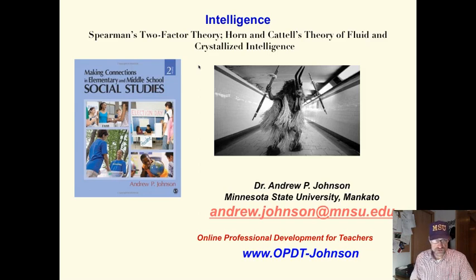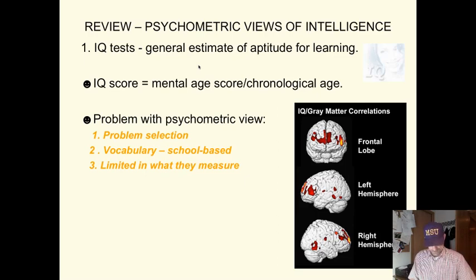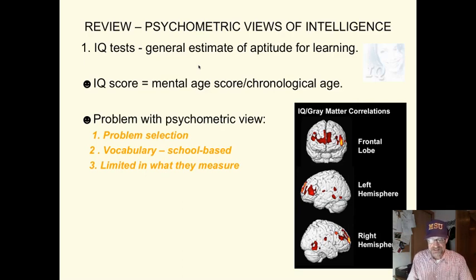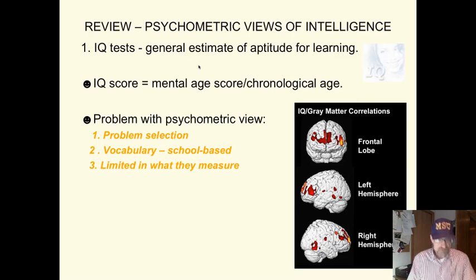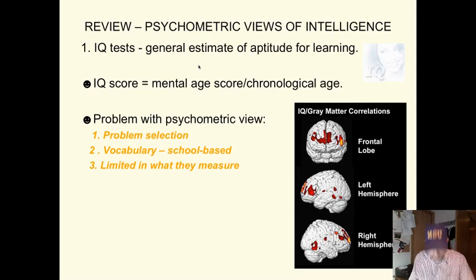We are looking at two theories of intelligence: Spearman's two-factor theory and Horn and Cattell's theory of fluid and crystallized intelligence. IQ tests are generally designed to measure how much you can learn and predict school success, but not necessarily success in the real world. An IQ score measures your intelligence quotient, calculated by dividing your mental age by your chronological age.